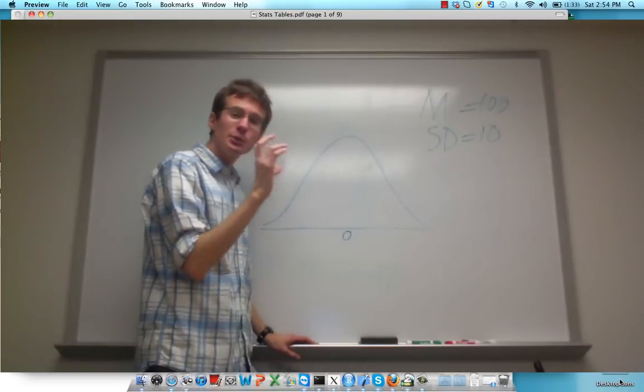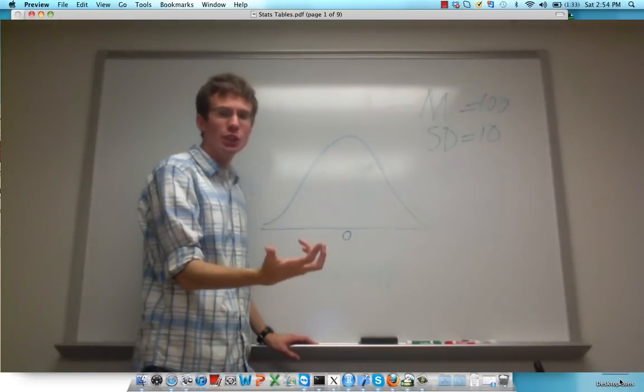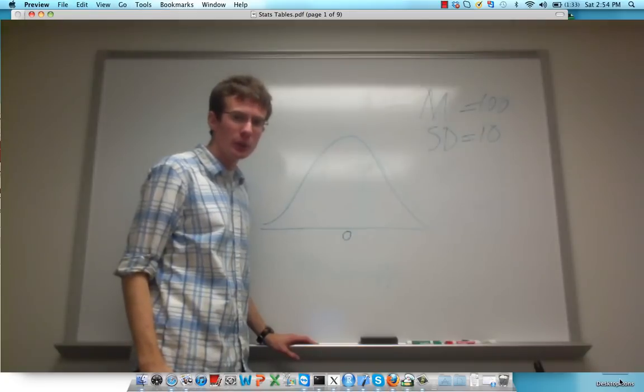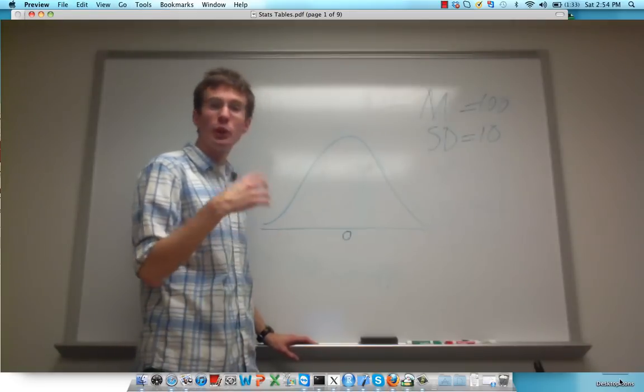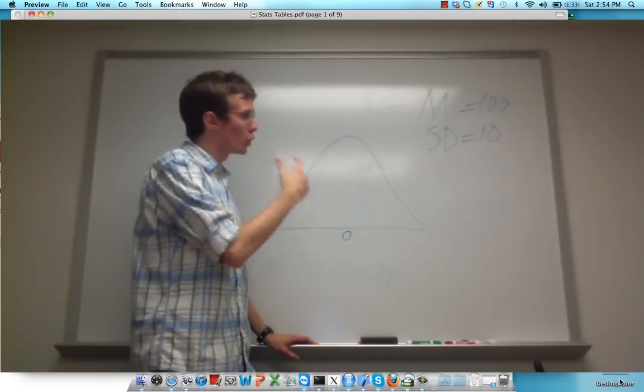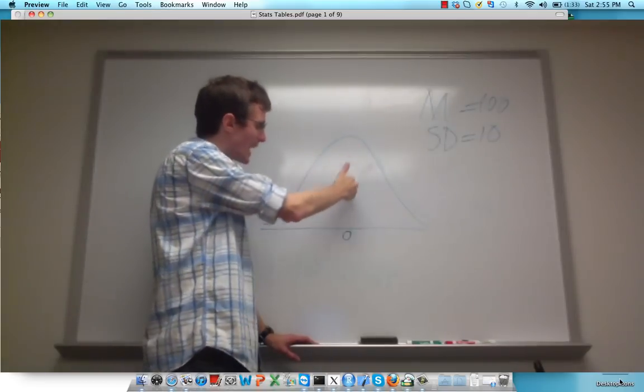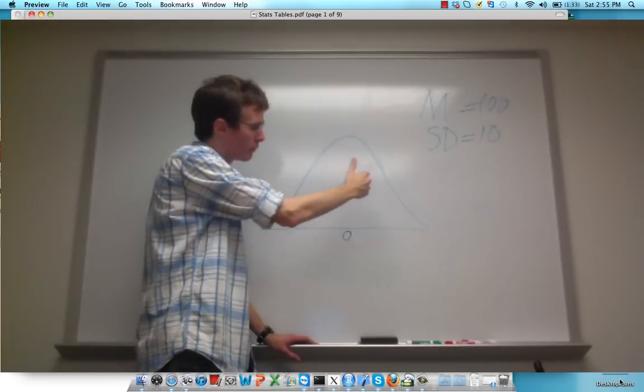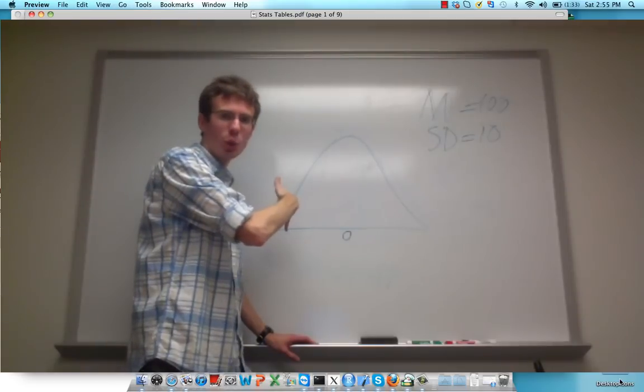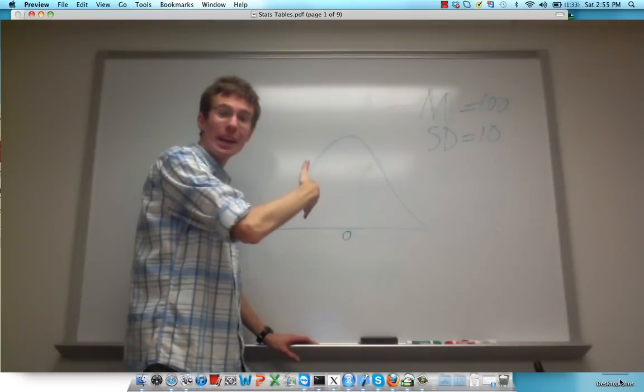The first thing we do is convert that raw score to a z-score, as we did in the previous videos. After we've done that, we use what's called a z-table to look up what percentile, or what area of this curve, either at or below that score, is associated with that score.